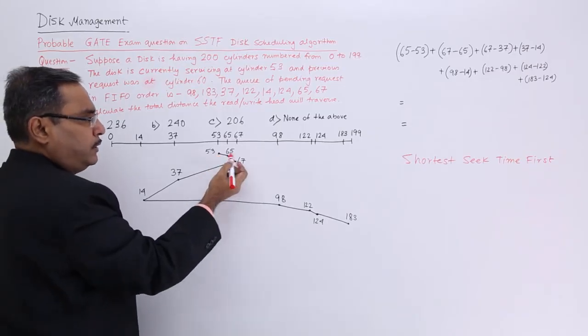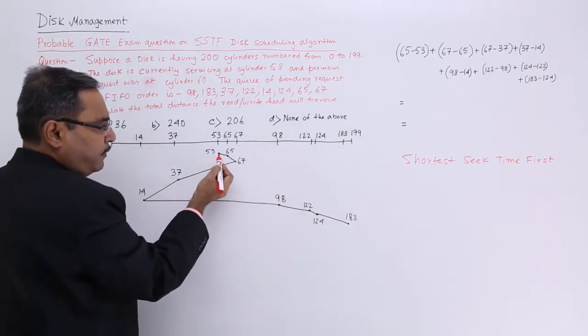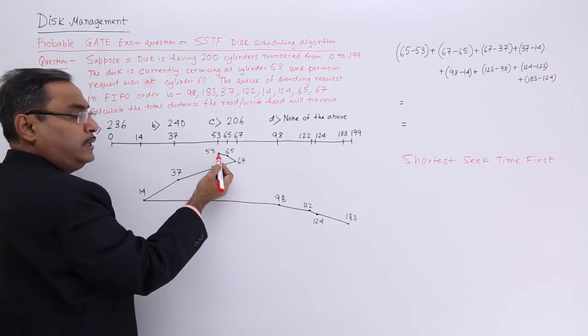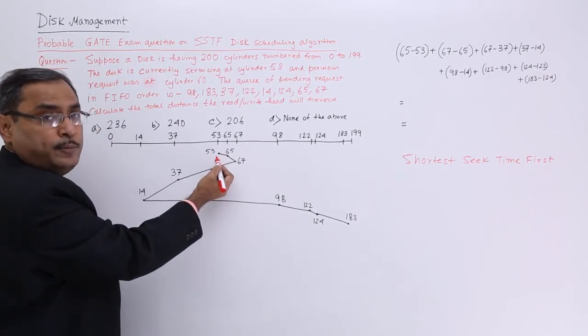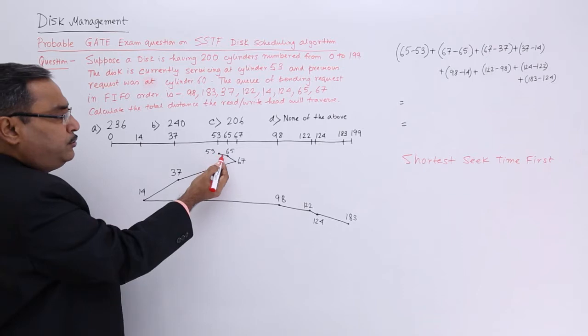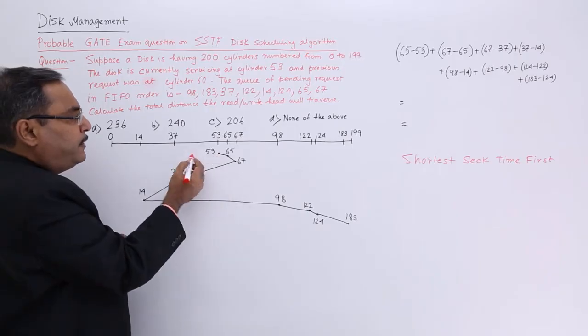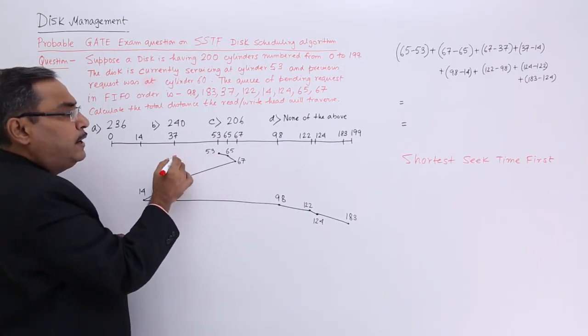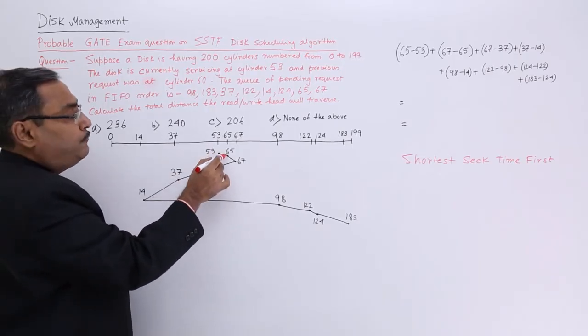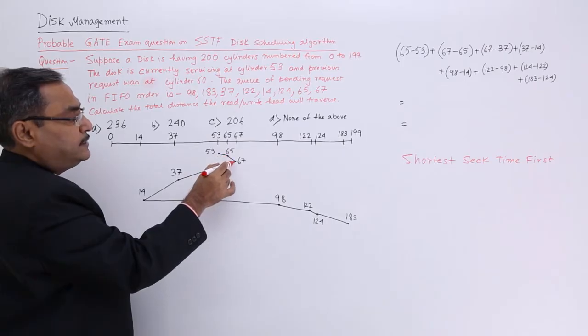From 53, what is the logic of this SSTF? From 53, I shall go to that particular cylinder whose distance will be minimum. From 53 I should go to 65, from 65 to 67. From 53, if I want to go to 37, that will be a long distance. So I should be going for 65 and then 67.